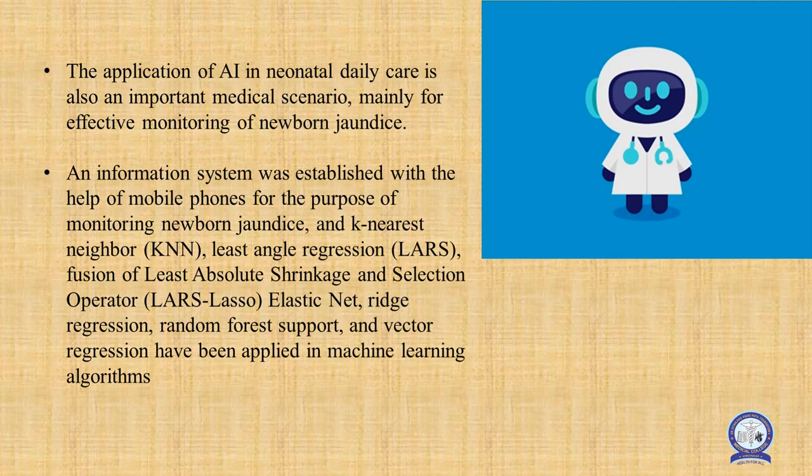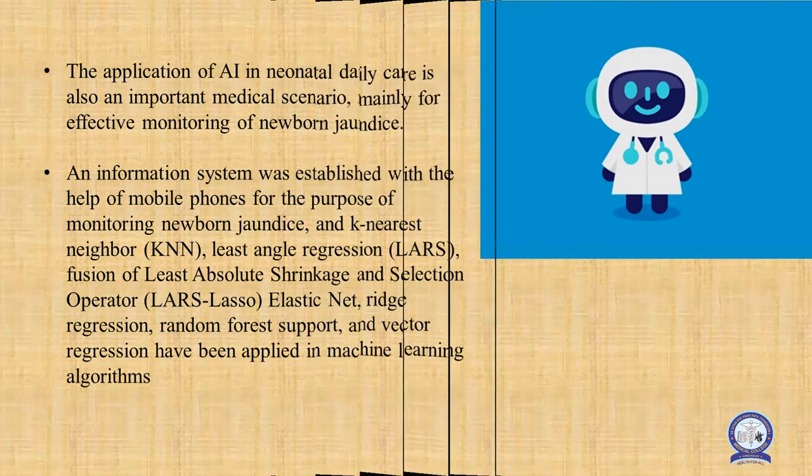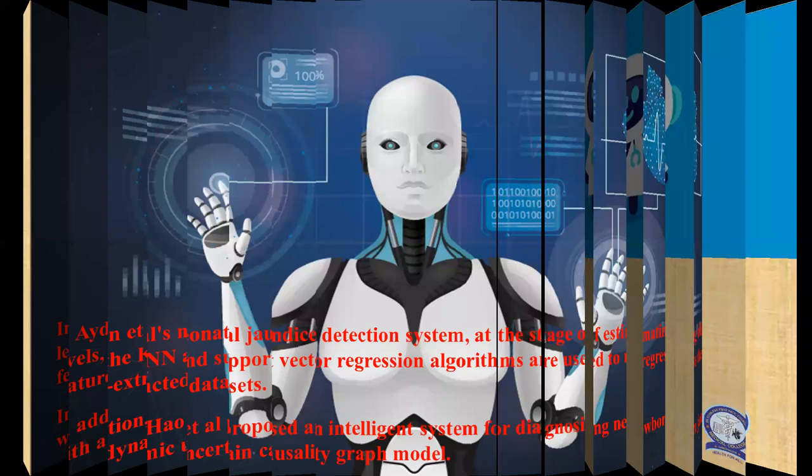The application of artificial intelligence in neonatal daily care is also an important medical scenario, mainly effective for monitoring neonatal jaundice. An information system was established with the help of a mobile phone for the purpose of monitoring neonatal jaundice. The K-nearest neighbor, least angle regression, fusion of least absolute shrinkage and selection operator, elastic net, ridge regression, and random forest support vector regression have been applied as machine learning algorithms for diagnosis and monitoring of neonatal jaundice.